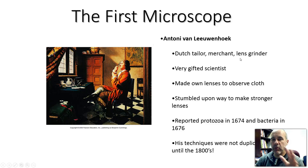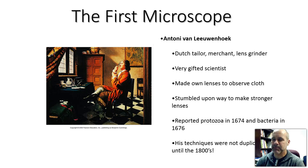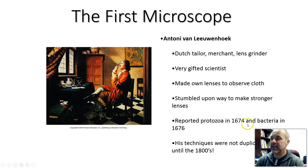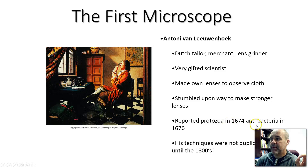He figured out a way to grind glass so that it could magnify things much, much more strongly — much more powerfully than a typical magnifying glass from the 1600s. Once he did this, he started looking at all sorts of different things, and he noticed the first microorganisms. In 1674, he reported the first protozoans — those are single-celled microorganisms in the eukaryotic cell category. Then he noticed bacteria in 1676; he didn't call them that, but we now realize that's what he was looking at.